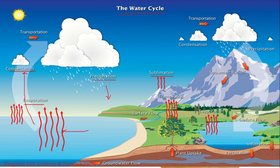When water reaches the earth's surface it has three options. The first option is it may once again evaporate and enter into the atmosphere. The second option is it may flow over the surface and reach lakes, reservoirs, or oceans, where it may form part of surface water and evaporate again, continuing the cycle. The third option is it may percolate into the ground. Water in the upper levels of the soil can be taken up by plant roots, and some amount of water may be lost to transpiration back into the atmosphere.